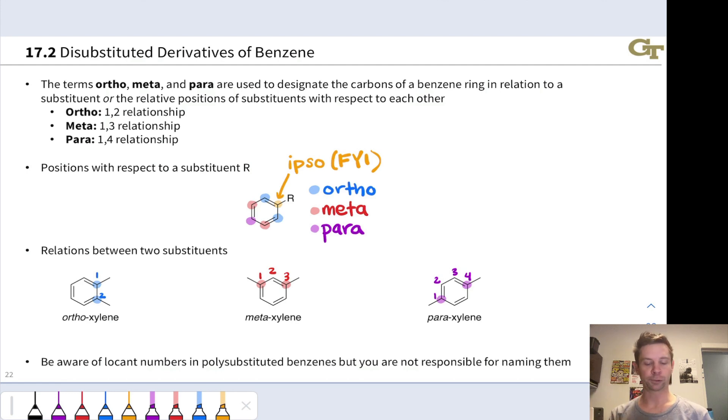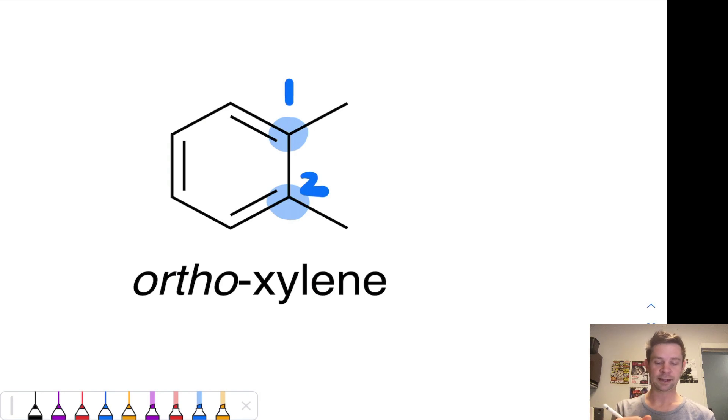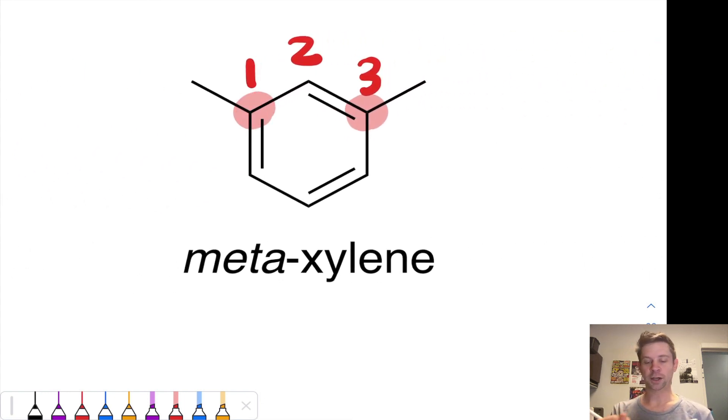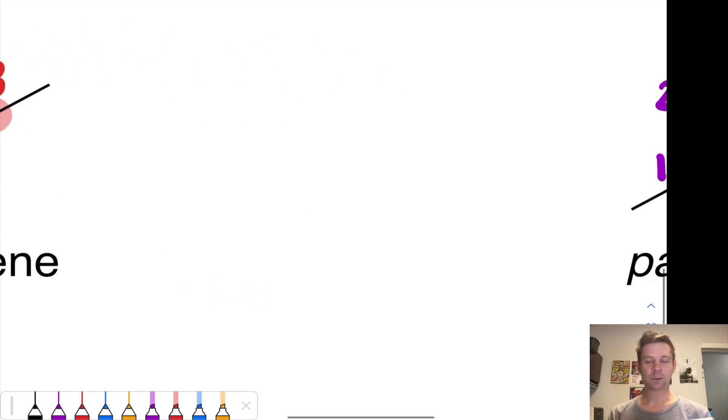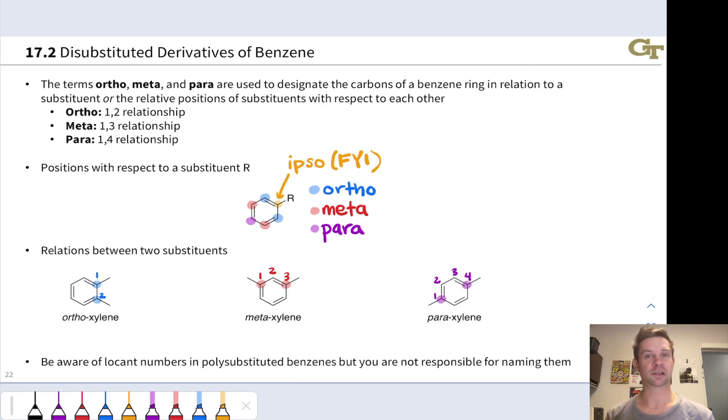We can also use these terms for relationships between two substituents. So ortho xylene, for example, we've already seen that's a 1-2 relationship between these two methyl groups. The term ortho designates that. When those methyl groups have a 1-3 relationship, we're looking at meta xylene, and when those methyl groups have a 1-4 relationship, we're looking at para xylene. So we use these terms a lot, particularly as we get into reactions and think about different constitutional isomers that could be formed in reactions of benzenes.